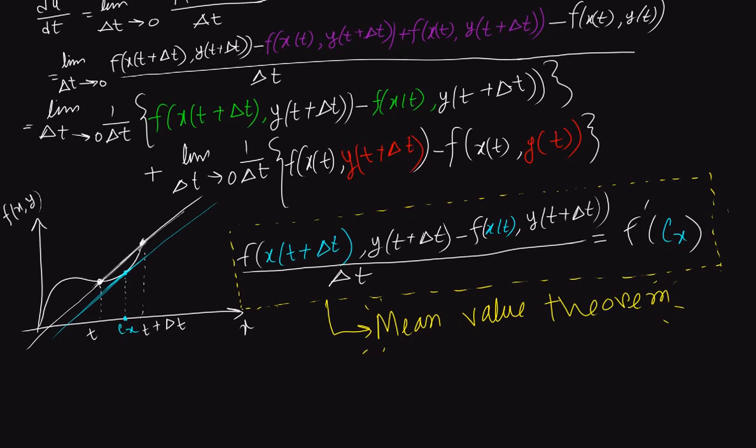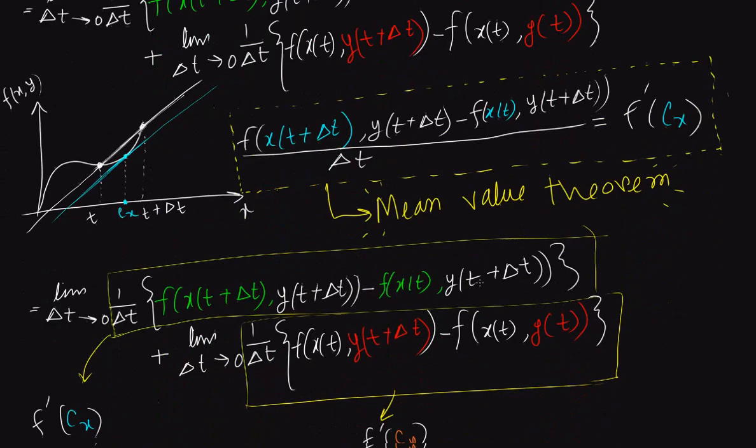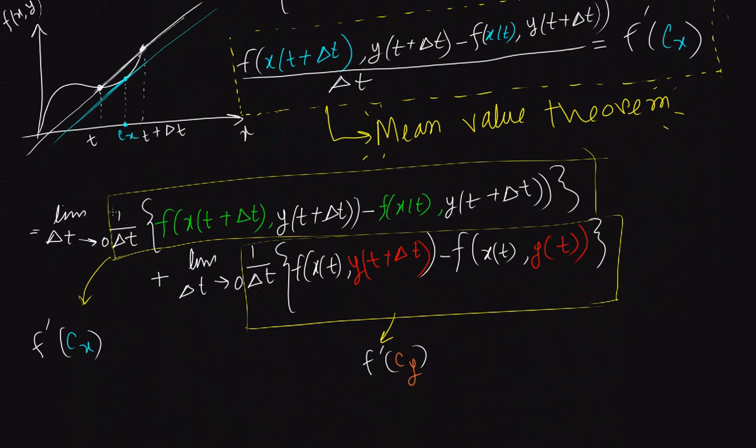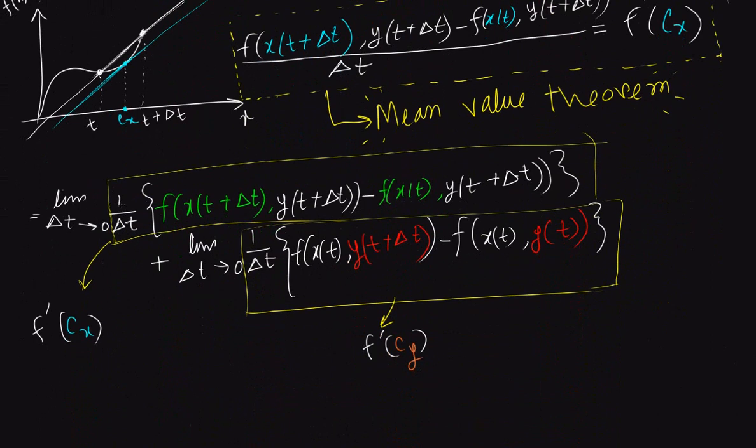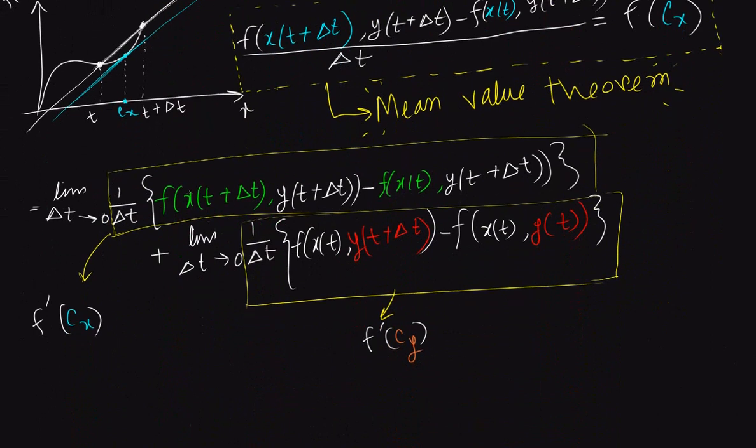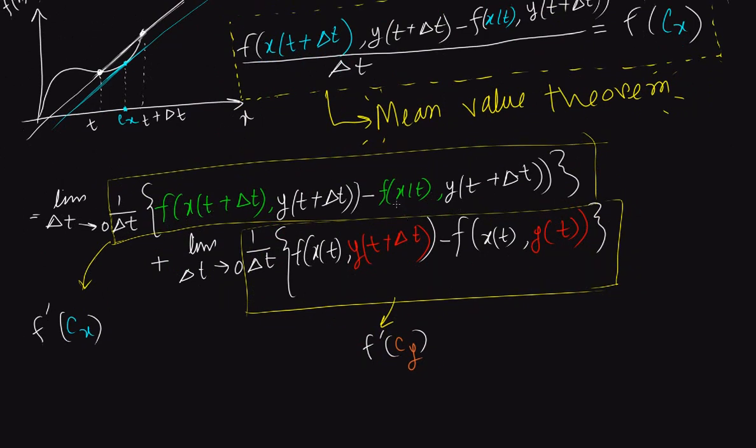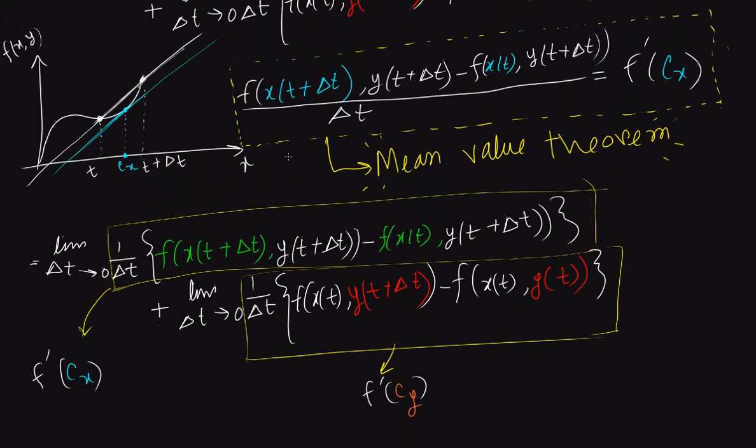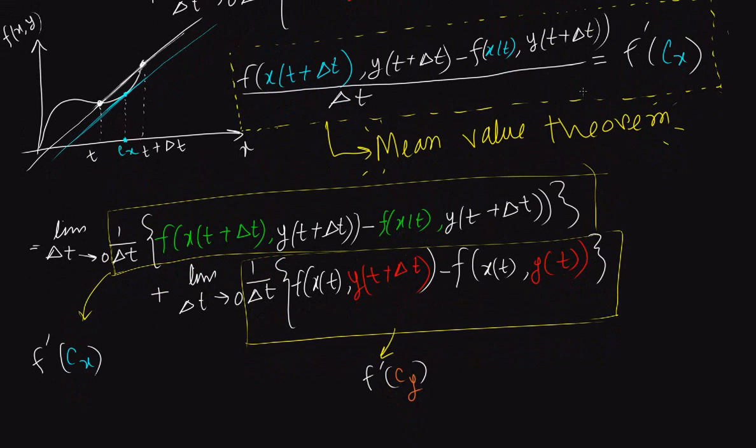Then we apply Mean Value Theorem in our expression over here. This term, the above term, has f of x t plus del t and y the constant term, then f of x t, y the constant term. It looks similar to this one, right? Then we can put f prime of cx here instead of this.